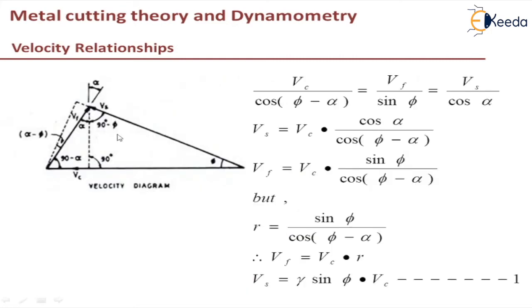I will rewrite the equation again. I am using the same sketch here. So this is the equation which we already got by applying the sine rule to this velocity diagram. So Vs will be equal to Vc into cos alpha by cos phi minus alpha.